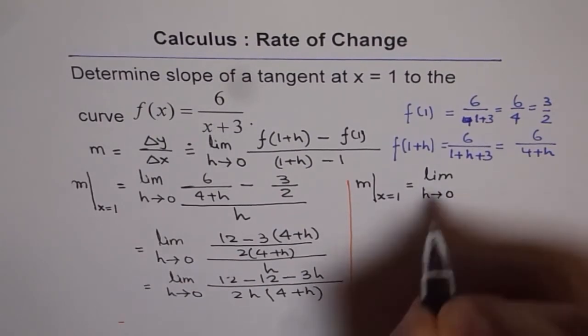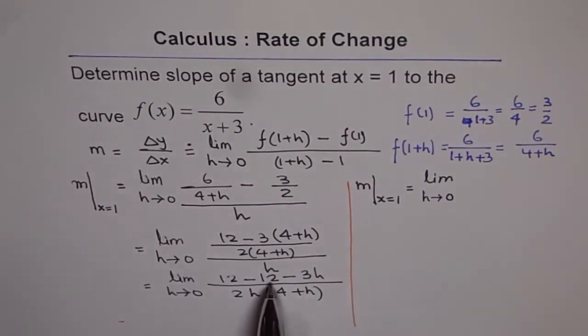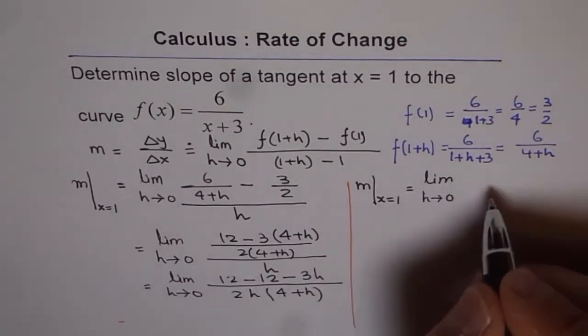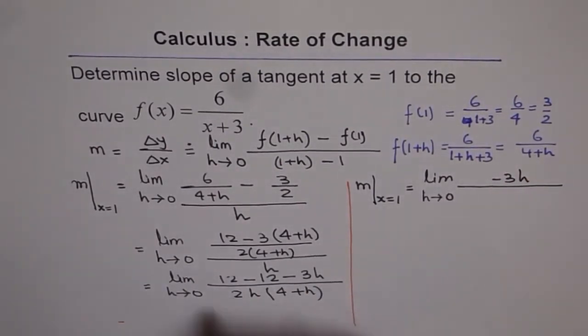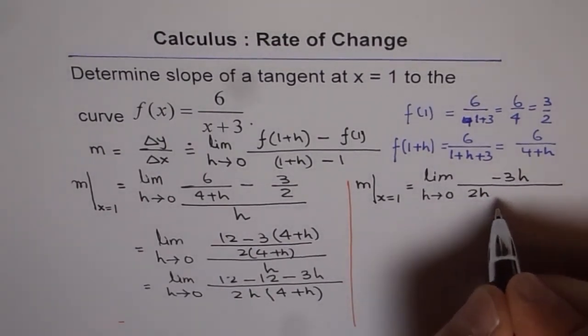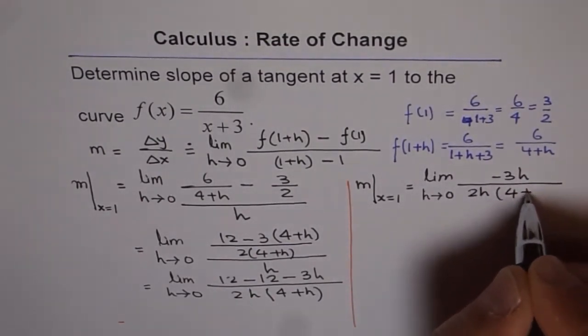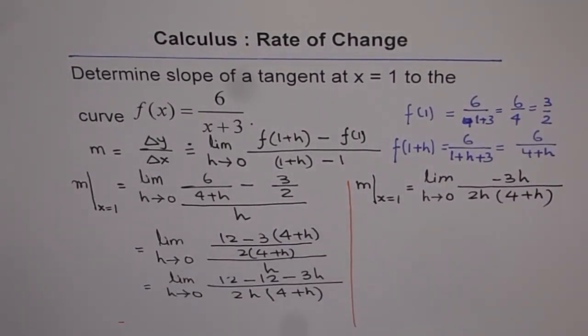h approaches 0. 12 minus 12 is 0. And we get minus 3h. So, we get -3h divided by 2h times (4+h), correct? And now, h and h goes. We get h divided by h is 1.